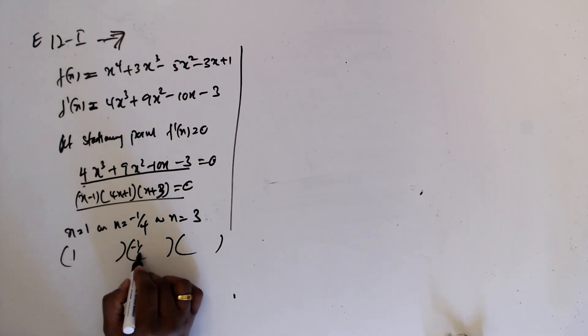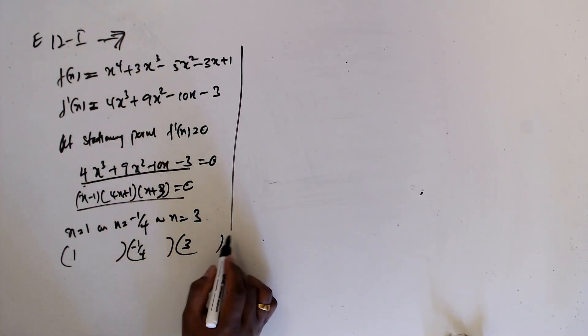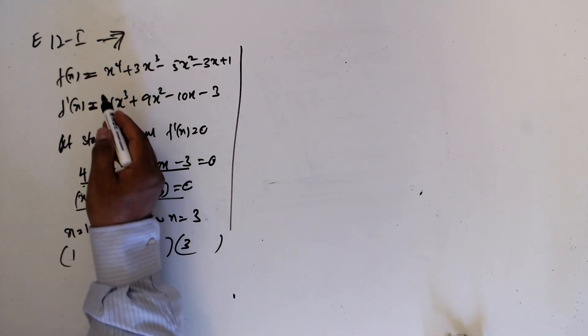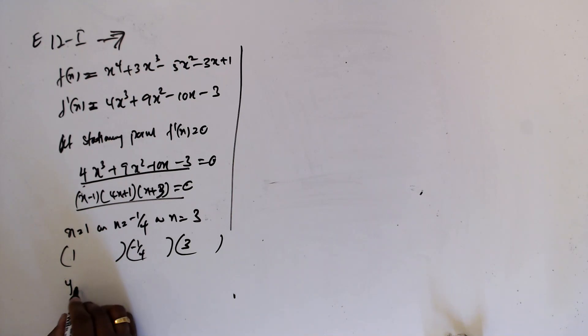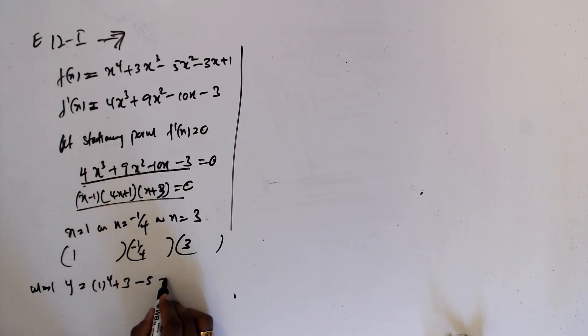1, minus 1/4, 3. So x equal 1, when x equal 1, y equal 1^4 plus 3 minus 5 minus 3 plus 1 will give minus 3.